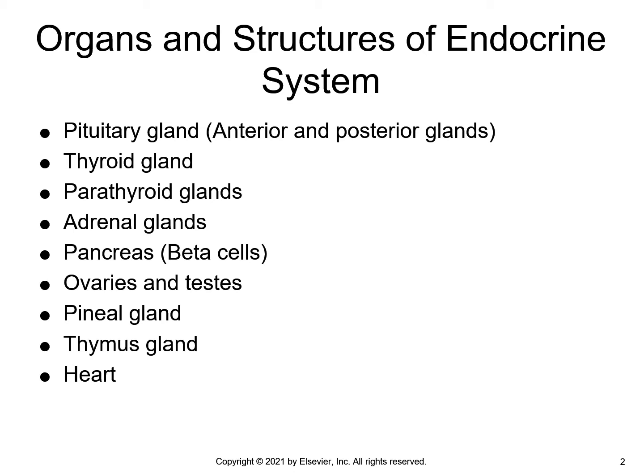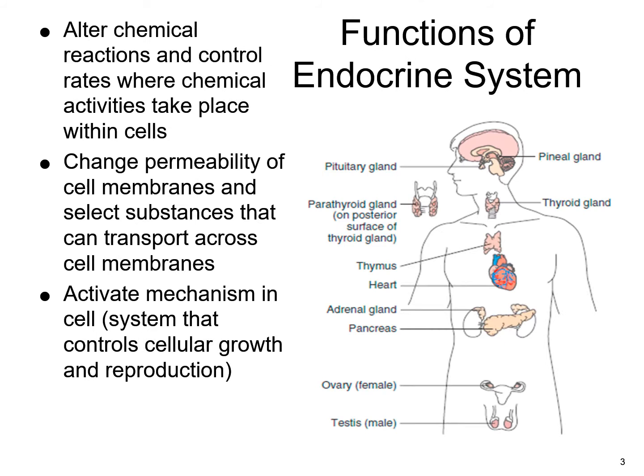The heart is in the midchest and it functions as an endocrine gland when it secretes the hormones atrial natriuretic peptide (ANP) and B-type natriuretic peptide (BNP). When the muscle is stretched, the heart secretes hormones that have a diuretic effect. The endocrine system alters chemical reactions and controls the rate at which chemical activities take place within the cells. The hormones secreted change the permeability of the cell membranes and select substances that are transported across the cell membranes, activating mechanisms in each cell.